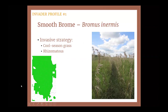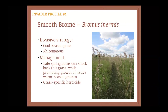We're going to start with some prairie invaders that are grasses, and the first one is smooth brome. This grass is a cool-season rhizomatous grass — it was introduced as forage and also planted for erosion control. Unfortunately, it has been reported in every county in Illinois. I identify smooth brome by running my fingers down a leaf blade and feeling for an M-shaped crimp in the leaf. For management, we can utilize late spring burns to knock back this species because that's when it is tending to enter its flowering phase, and then we can also stimulate the growth of warm season grasses. We can pair that with using a grass-specific herbicide to increase the success of our management.